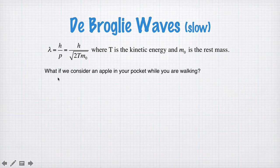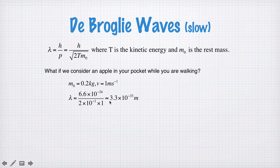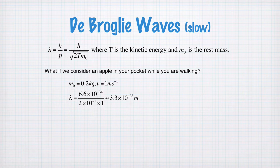So what if we consider an apple in your pocket while you're walking? What's the wavelength of the apple? Well, it's got a mass of maybe 200 grams, velocity of 1 meter per second. We plug this into the equation and we get a wavelength of about 3 by 10 to the minus 33 meters. This is an extremely small wavelength, much smaller than the size of an apple. So it's not surprising perhaps that we can't see the wave nature of an apple because it's just too small a wavelength for us to see.